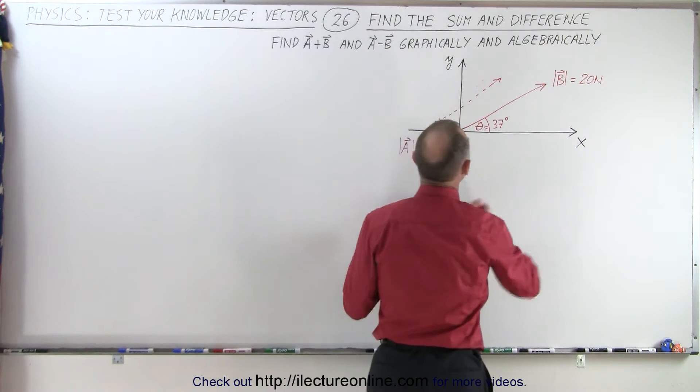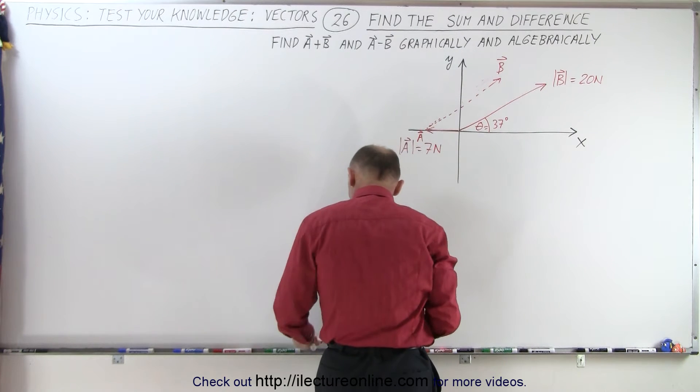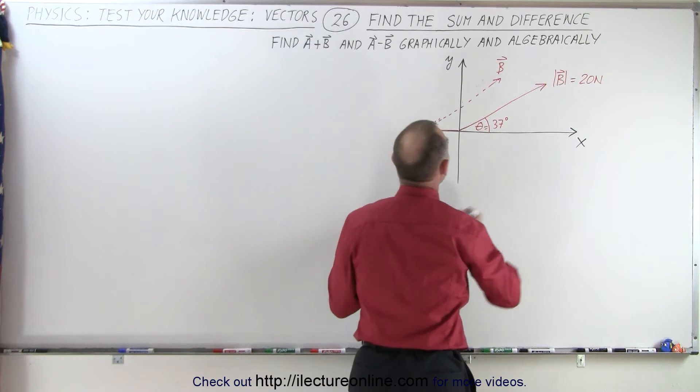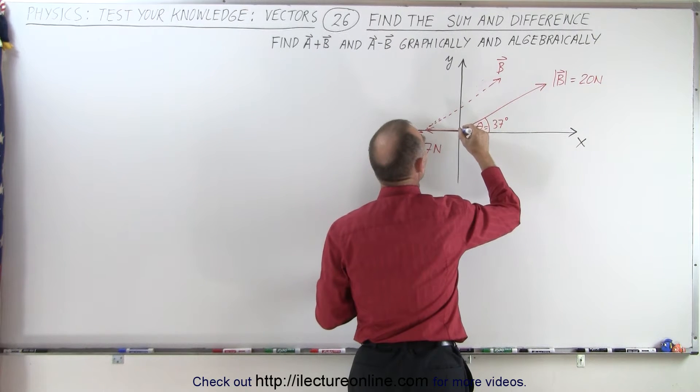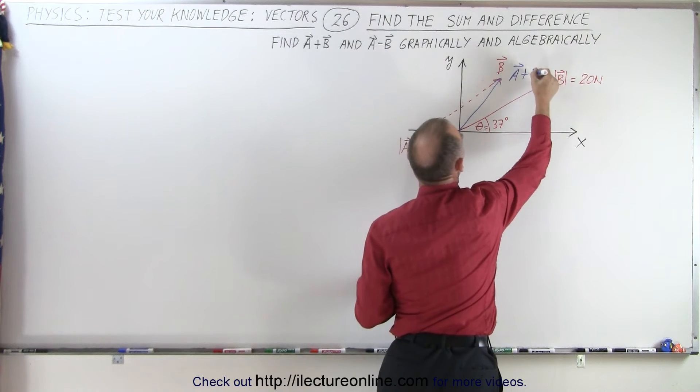So we've moved the vector B over here. There's vector A. And the resultant then, let's use the blue color, that would be A plus B, from there to there. And this would then be A plus B.